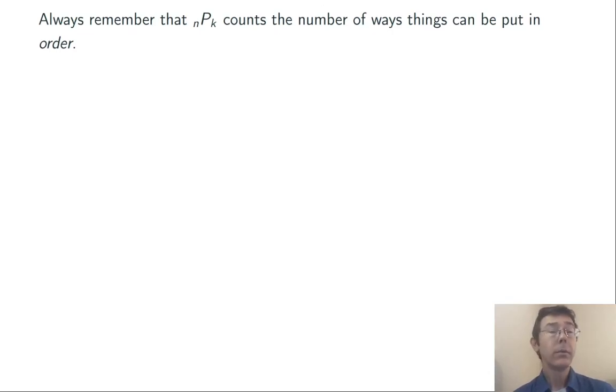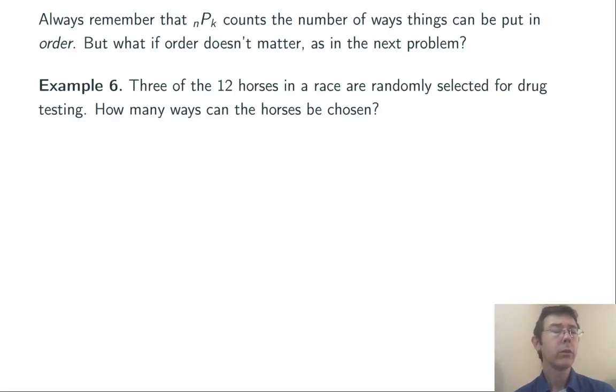It's essential to remember that n permute k counts the number of ways that things can be put in order. Sometimes, though, we aren't so concerned about order, and we're just concerned with how many different ways can we select groups of k objects. Like in this example.